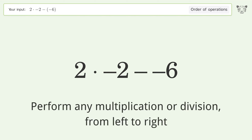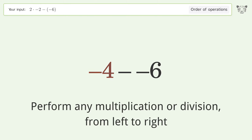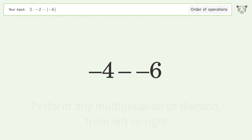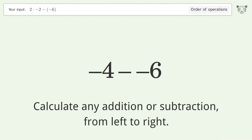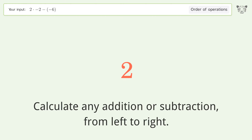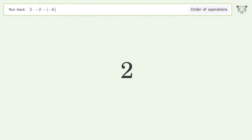Perform any multiplication or division from left to right: two times negative two equals negative four. Then calculate any addition or subtraction from left to right — minus and minus make a plus. Negative four plus six equals two, and so the final result is two.